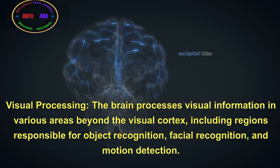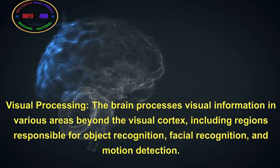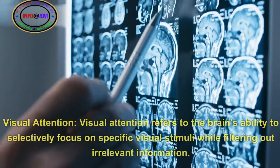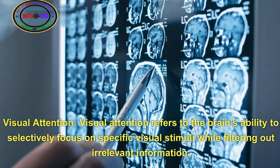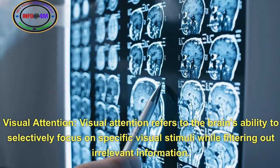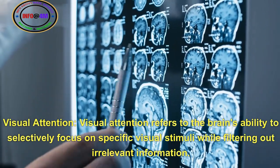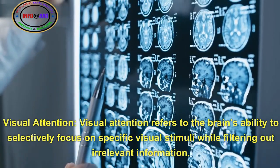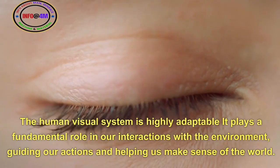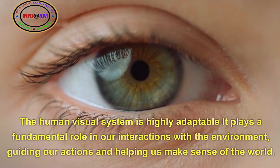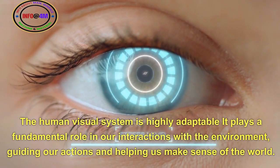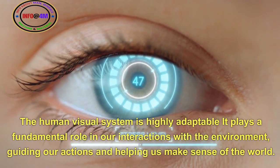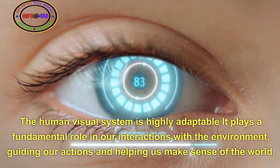The brain processes visual information in various areas beyond the visual cortex, including regions responsible for object recognition, facial recognition, and motion detection. Visual attention refers to the brain's ability to selectively focus on specific visual stimuli while filtering out irrelevant information. The human visual system is highly adaptable and plays a fundamental role in our interactions with the environment, guiding our actions and helping us make sense of the world.